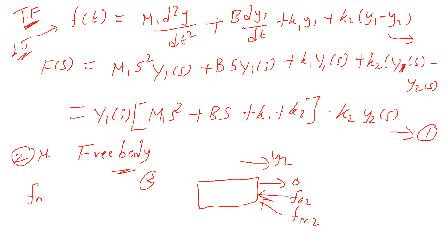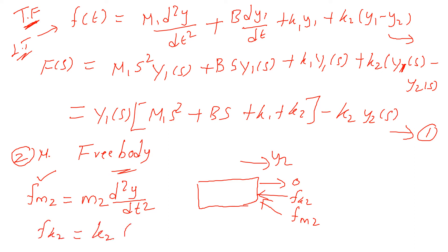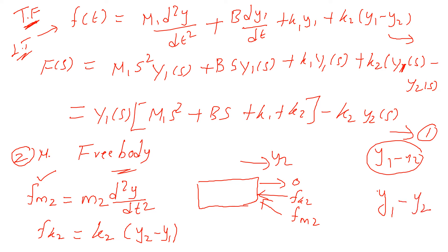What is Fm2? Force acting on the mass is proportional to M2 times acceleration d²y/dt². For Fk2, the spring acts on M2 as K2·(y2 minus y1), because for the first equation we wrote y1 minus y2, so for M2 the relative displacement is y2 minus y1. So the force balance equation gives 0 equals M2·d²y2/dt² plus K2·(y2 minus y1).